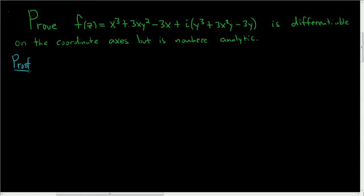So we'll start by looking at the real part and the imaginary part of f and try to see when the Cauchy-Riemann equations hold. So set u(x,y) equal to the real part of f, so that will be x³ + 3xy² - 3x. And we'll set v(x,y) equal to the imaginary part of f, so that's y³ + 3x²y - 3y.